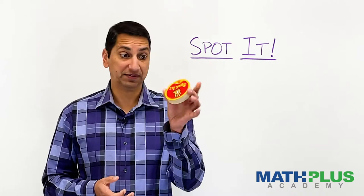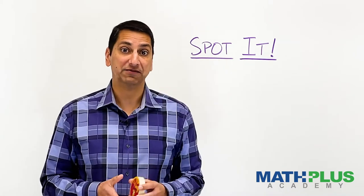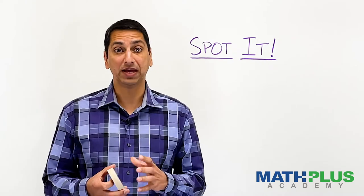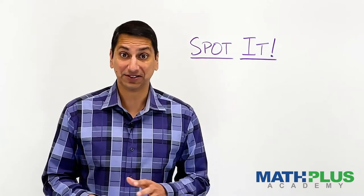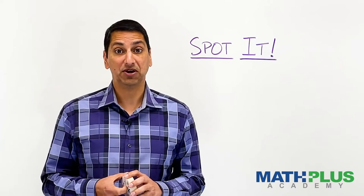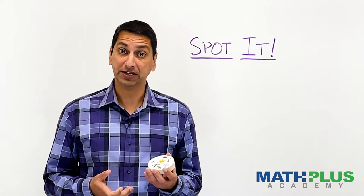And they end up with about this many cards, 50 some cards in this Spot It deck with eight symbols on every card. Okay, that's a lot for us to figure out. So let's start with something really simple. What if I wanted to create a Spot It deck where there were only two symbols on every card? Could I do it?